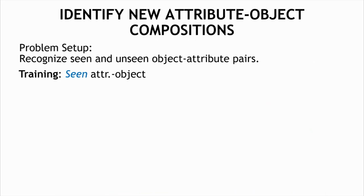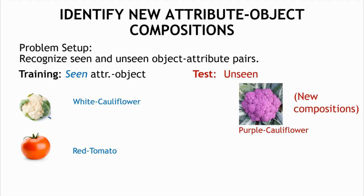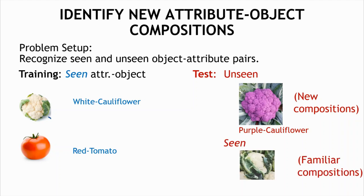More formally, in this work, we specifically focus on recognizing new combinations of attributes and objects. For example, at training time, we see examples of white cauliflowers and red tomatoes, but at test time, we may see a purple cauliflower that we have never seen before. And of course, we still want to recognize familiar combinations.